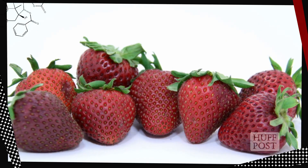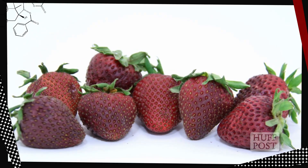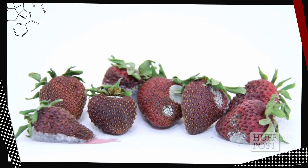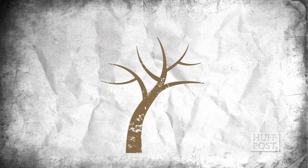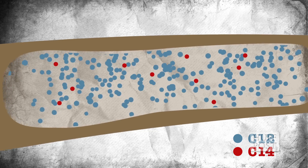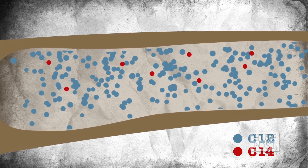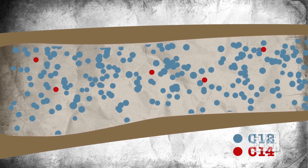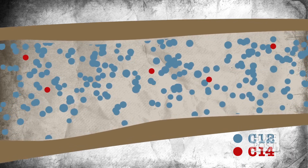When an organism dies, it stops taking in carbon, and the C-14 in the organism's tissue starts to decay at a precise speed. But the amount of carbon-12 stays the same, since it's not radioactive. We know that it takes 5,730 years for half of the C-14 in a sample to decay, then another 5,730 years for half of what's left to decay, and so on. This is C-14's half-life — all radioactive isotopes have one. And if we compare the amount of C-14 in a dead thing to the amount of regular carbon-12, we can find out how old it is.